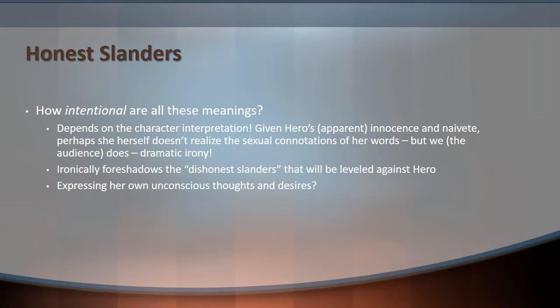Hero is often interpreted as very innocent and naive, and she seems throughout the play to not have much understanding of how the world works. So perhaps she herself doesn't even realize the sexual connotations — that honesty in 'honest slanders' could mean slandering Beatrice's chastity. We as the audience do recognize that, so there's dramatic irony. And even more so, this ironically foreshadows the dishonest slanders that will be leveled against Hero herself — Hero says she's going to slander Beatrice, and Hero is the one who ends up slandered. Perhaps Hero is innocent and naive but has desires of her own, and maybe something in her unconsciously realizes the sexual connotation because she's a young woman on the verge of marriage.